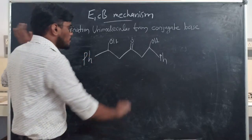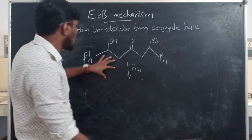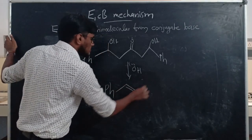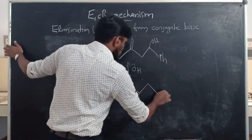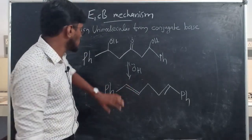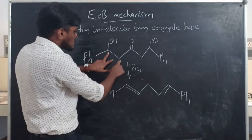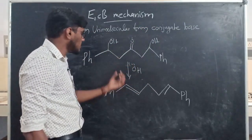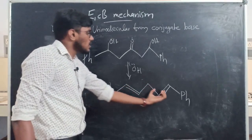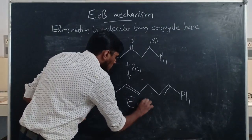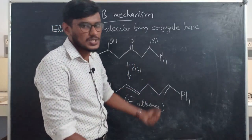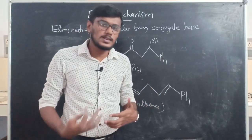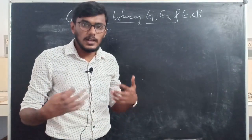Regarding stereochemistry: a carbanion intermediate forms, which is planar, so the stereochemistry of the starting material is irrelevant. However, there is a preference for the E alkene over the Z alkene because E is less hindered than Z. For example, a compound undergoing double E1CB elimination with a base forms two double bonds — this double E1CB mechanism operates and gives alkene products with E configuration. So the E isomer is more preferred over the Z isomer.